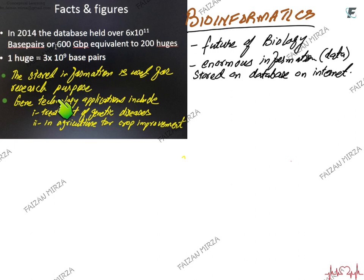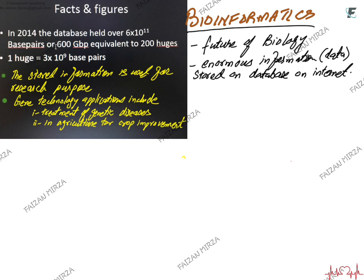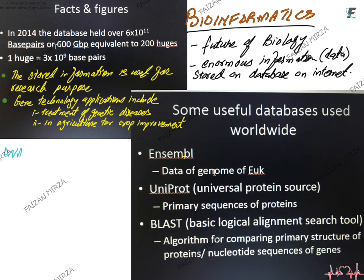All this data is used for research purposes and gene technology. Applications include treatment of genetic diseases — knowing the sequence of a diseased allele, how to replace it with a normal allele, and using vectors to make a recombinant DNA and place that gene into an organism. In agriculture, it is used in crop improvement and in cattle and fish — for example, salmon fish that grow very large in less time to help feed the human population.